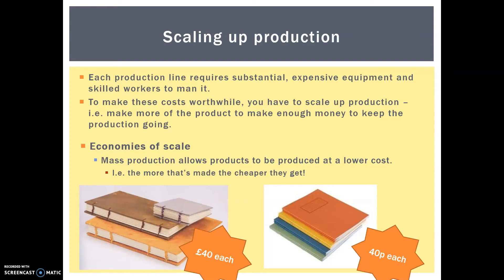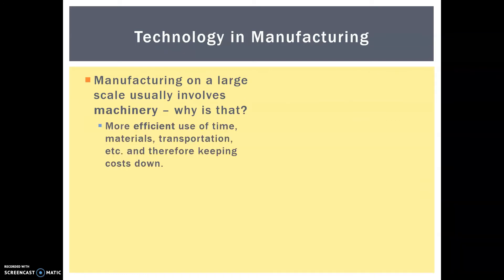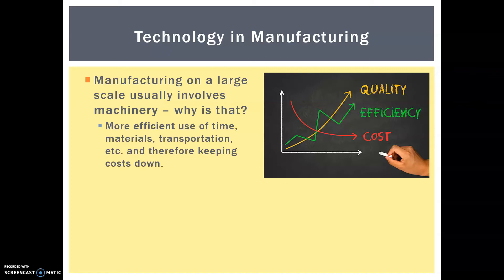Mass production allows products to be produced at a lower cost — the more that's made, the cheaper they get. For example, if you do book binding yourself and charge for your time, it could easily cost 40 pounds. But exercise books like the ones at school are going to be 40 pence each. So the more we produce, the cheaper they get. To implement these economies of scale, manufacturing involves a lot of machinery, trying to get more efficient use of time, materials, even transportation — keeping those costs down.